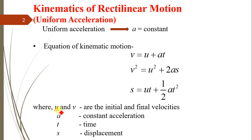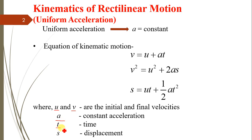The velocity of the body when it starts motion is denoted by the symbol u, called initial velocity. After reaching the final point, the velocity is denoted by the symbol v, called final velocity. Here a is the constant acceleration, t is the time interval required for the motion, and s is the displacement.